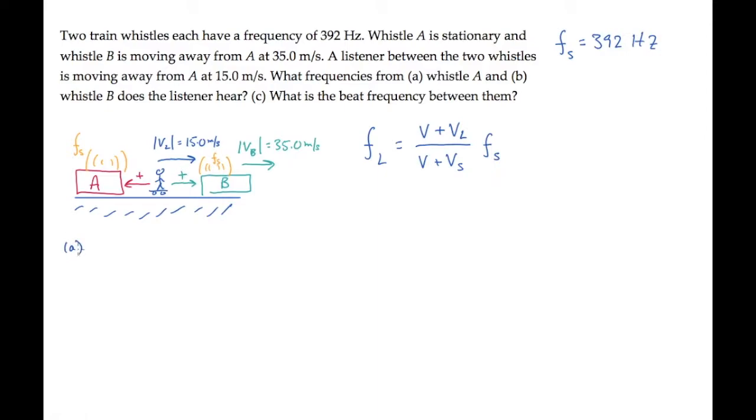In part A, we'll calculate the frequency heard by the listener from train A. Here, the positive direction is to the left, but the listener is moving to the right, so that picks up a negative sign. And the source is stationary; train A isn't moving. When we substitute values using the speed of sound equals 344 meters per second and calculate, we find that the frequency heard by the listener from train A is 375 Hz.